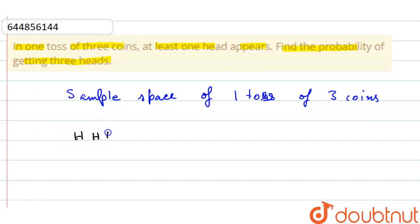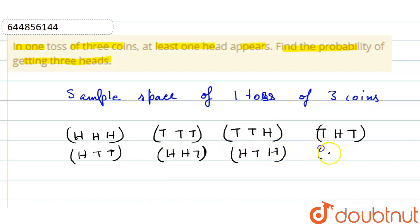Then we have tail tail tail, then tail tail head, then tail head tail, then head tail tail, then head head tail, then head tail head, and tail head head. So given that at least one head...